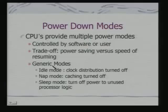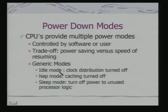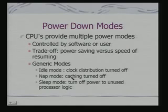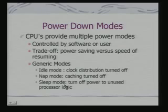CPUs using combinations of these gating modes provide multiple power modes, typically controlled by software or the user. Generic modes found in many CPUs include: idle mode, where clock distribution is turned off — essentially clock gating; nap mode, where the cache is turned off; and sleep mode, where power to unused processor logic is turned off — essentially power gating. In nap mode, if the cache is turned off, that involves signal gating. Dynamic power management means that when a device becomes idle, it can transition to a lower power usage state.